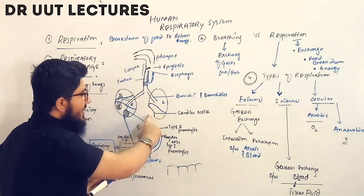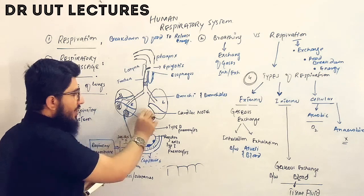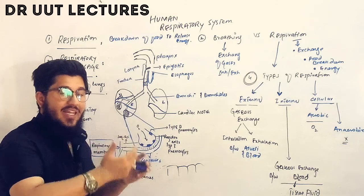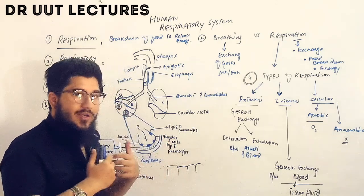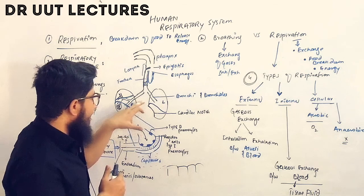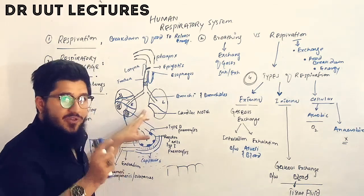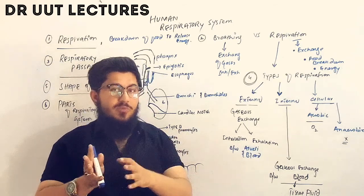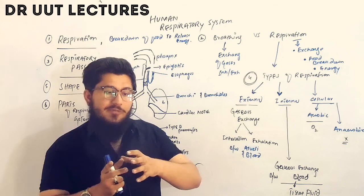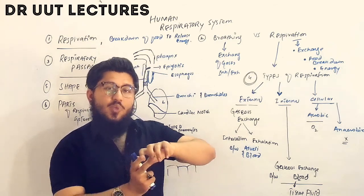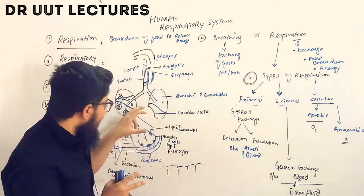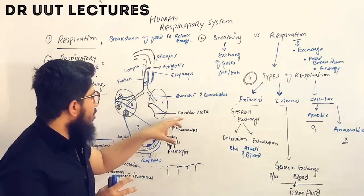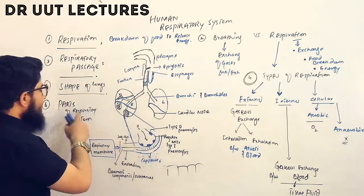One additional feature of the left lung is a notch called the cardiac notch. It is called the cardiac notch because it provides space to accommodate the heart. The heart is located in the mediastinum, between the lungs, and is tilted toward the left. Due to this tilt, the left lung develops the cardiac notch in that region.